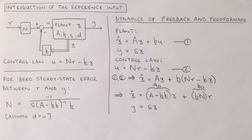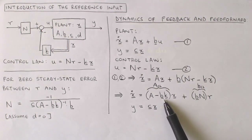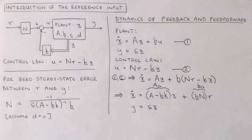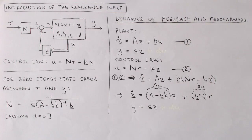An important thing to note is that the new a matrix is independent of the feed forward gain n. The new a matrix determines the closed loop poles of the full system, and we can therefore conclude that the reference feed forward gain does not influence the dynamics of the system.